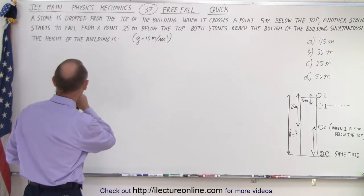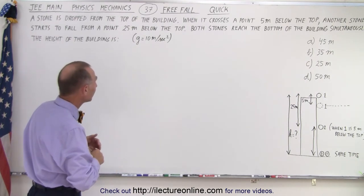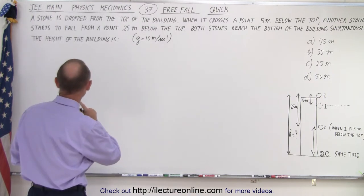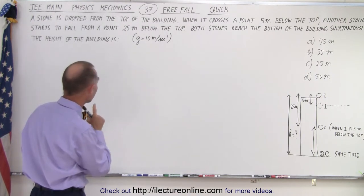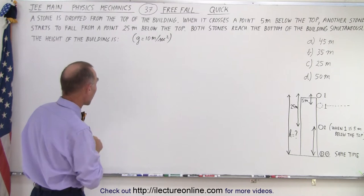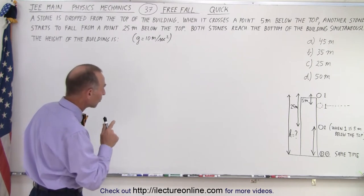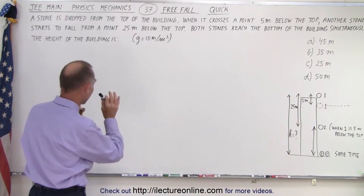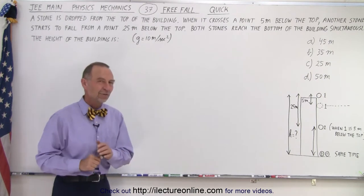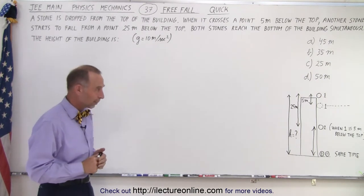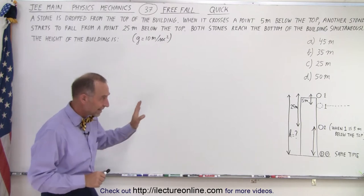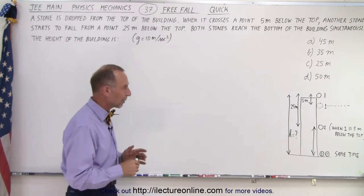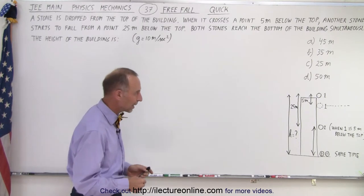It says a stone is dropped from the top of the building. When it crosses 0.5 meters below the top, another stone starts to fall from 0.25 meters below the top. Both stones reach the bottom of the building simultaneously. The height of the building is — and g equals 10 meters per second squared. Four possible answers. They didn't give us a diagram; I just put one there to make it easier to work out the problem and see what's actually happening.